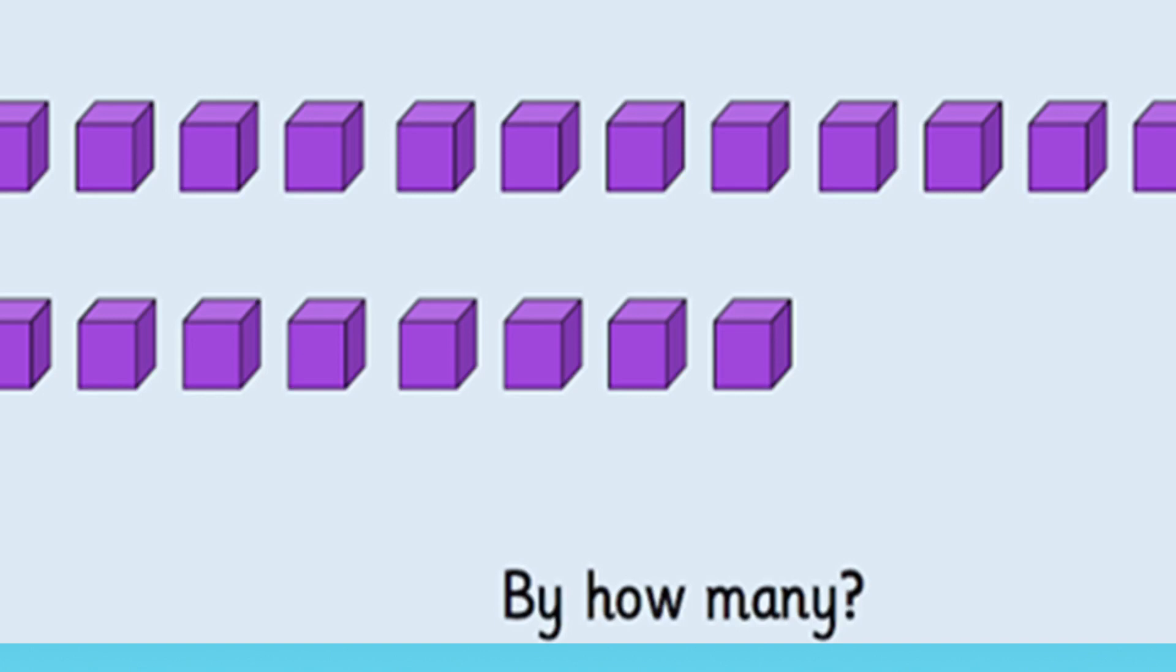Now you can see at the bottom it says how many. This is where it gets a bit tricky. You've got to look at how many extra cubes are in the greater group than there are in the smaller group. You can do this by counting them.